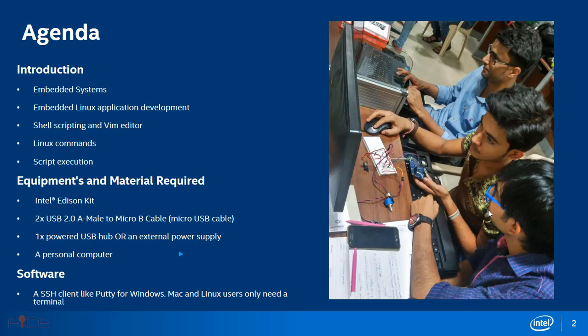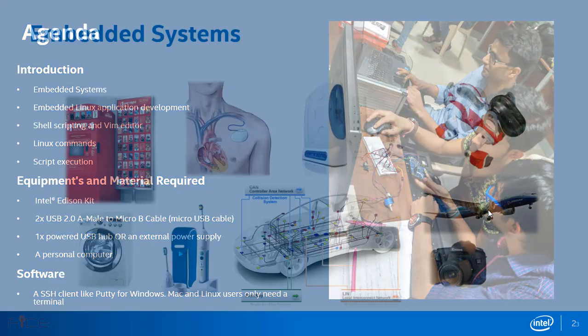If you want hands-on, you will require some equipment. You require an Intel Edison Kit, two USB 2.0 cables, a Male-to-Micro-B cable also called Micro-USB cable, one power adapter to power up the Intel Edison board, and a personal computer to connect with the Intel Edison. In the software part, you require an SSH client like PuTTY for Windows. Mac and Linux users only need a terminal, which is already included with those operating systems.